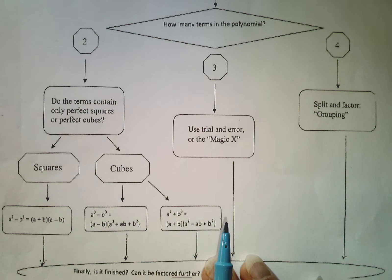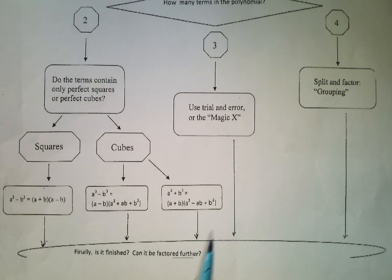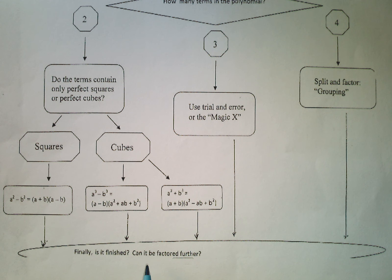No matter what strategy we used, when we were done, we had to see are we really finished? Or can some of the parts be factored even further? If they can, then we keep factoring.